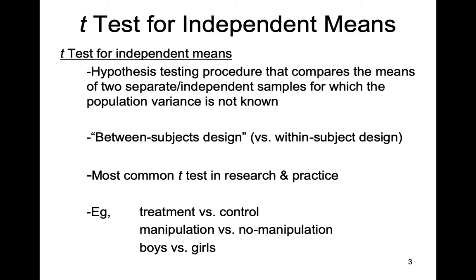For example, this is very common in an experimental design where we look at the difference between an experimental treatment versus a control, or an experimental manipulation versus a group that did not receive it. You could also use it to look at the difference between naturally occurring groups like boys versus girls or men versus women. Ultimately, this is a research situation in which we're comparing means from two different groups.